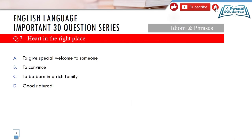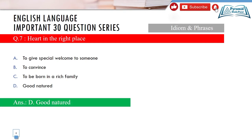Question 7 is idioms and phrases. The idiom is 'heart in the right place.' Options: A) to give special welcome, B) to convince, C) to be born in a rich family, D) good natured. The correct answer is option D — good natured. You should use such idioms in your sentence construction to improve your writing style.